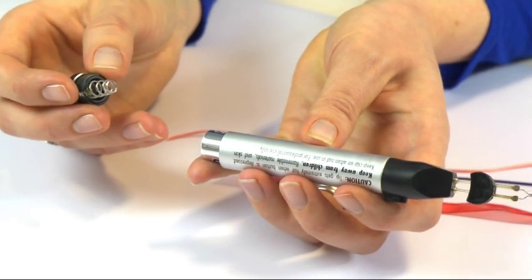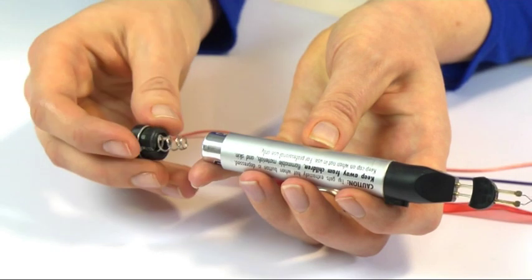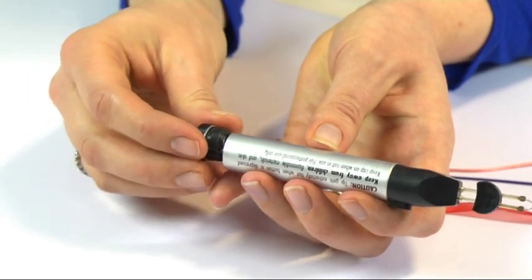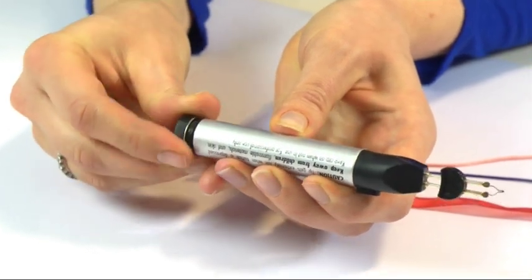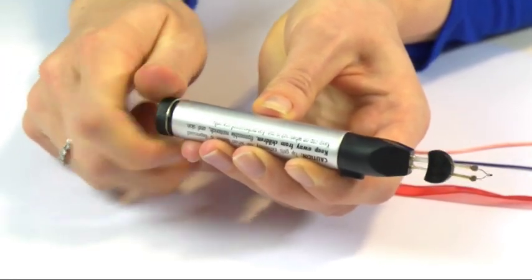So the Thread Zapper 2 Thread Burner works using one AA battery, which you insert in the end and then just twist the base in to secure it.